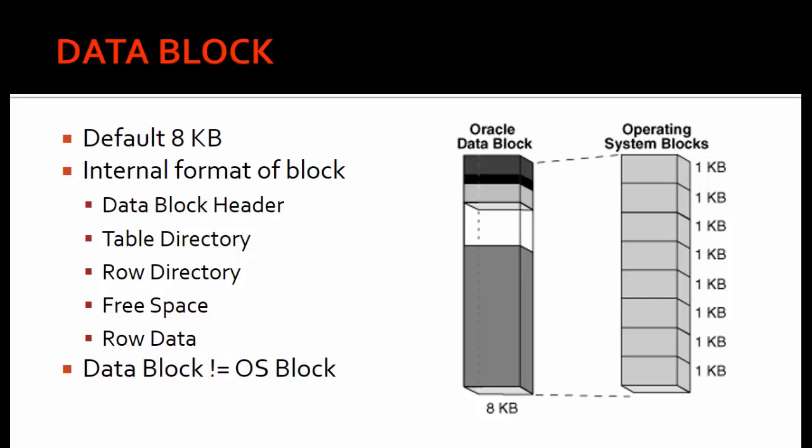What is the data block? The data block is the smallest unit inside the database storage logical structures. An Oracle block is always bigger than the operating system blocks. The default size of a data block is 8 KB. An Oracle data block contains 8 KB, which means it maps to eight 1 KB OS-level blocks. This diagram depicts how the Oracle data block is related to operating system blocks — OS blocks are smaller than the database blocks, and this all resides inside the database.